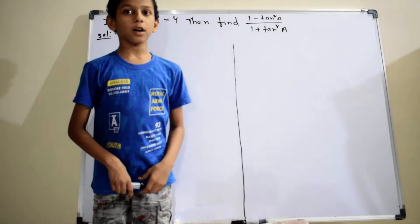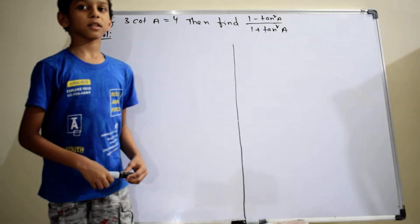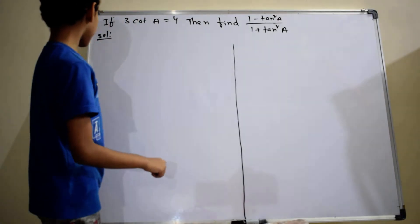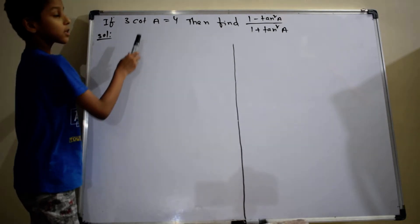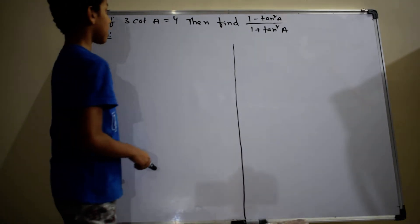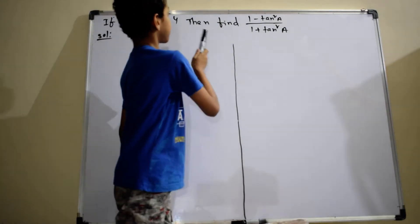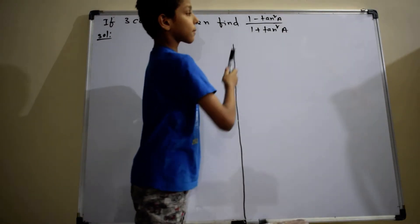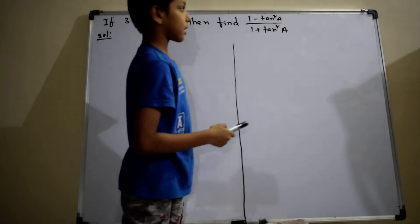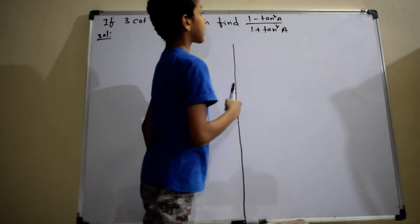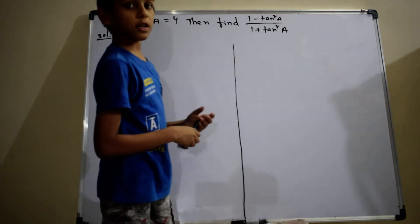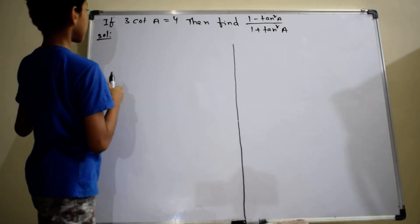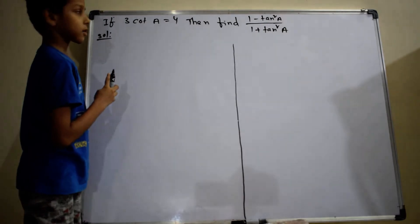Hi, I am Sai Prabhakarna. Let's discuss the solution of the given problem. The problem is: if 3 cot A equals 4, then find 1 minus tan square A by 1 plus tan square A. Let's start.